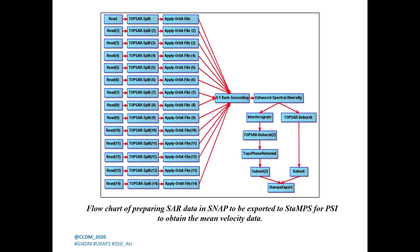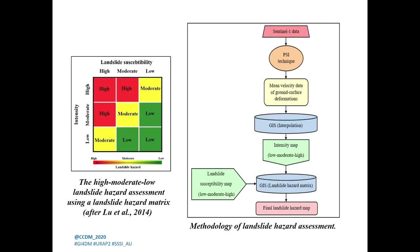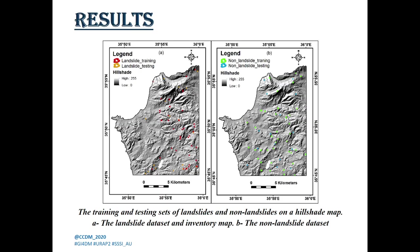This flowchart shows the preparing process of SAR data of the 14 images of Sentinel-1 in SNAP to get the two products to be exported to STAMPS for using the PSI technique to obtain the phase data. The methodology for landslide hazard assessment depends on interpolating the phase data to be used together with the susceptibility map in a landslide hazard matrix in QGIS to obtain the landslide hazard map.